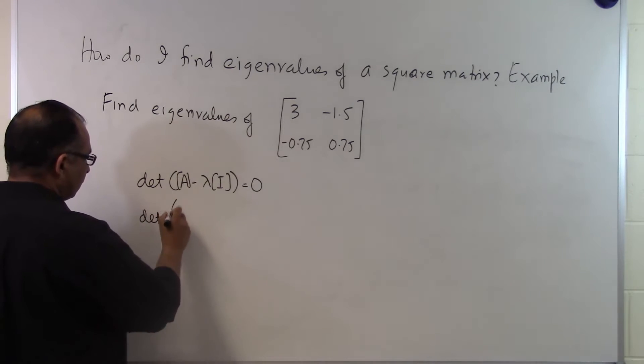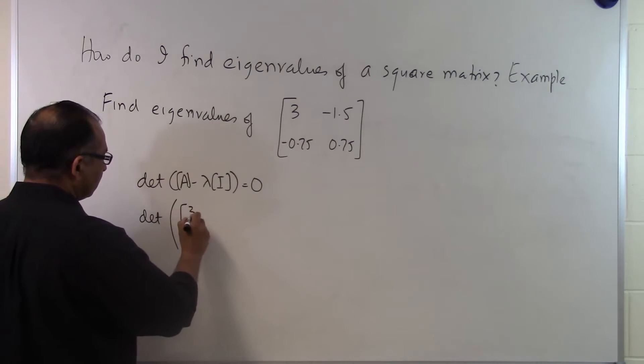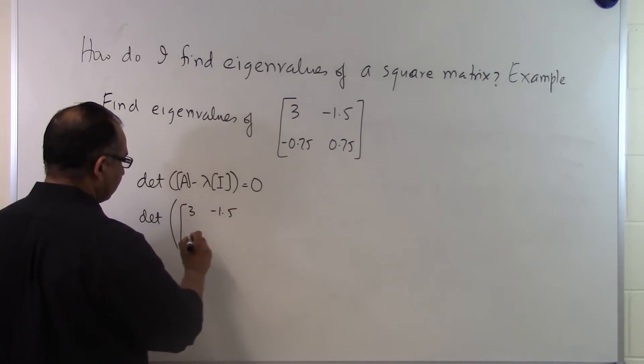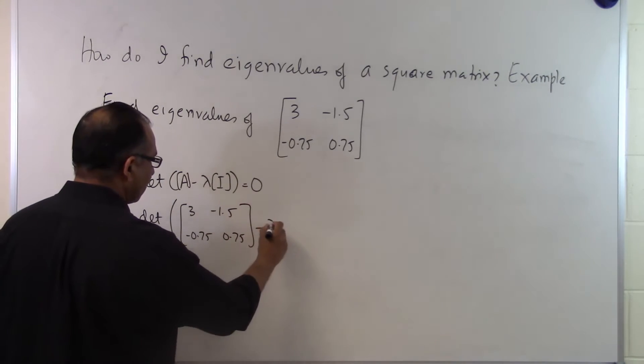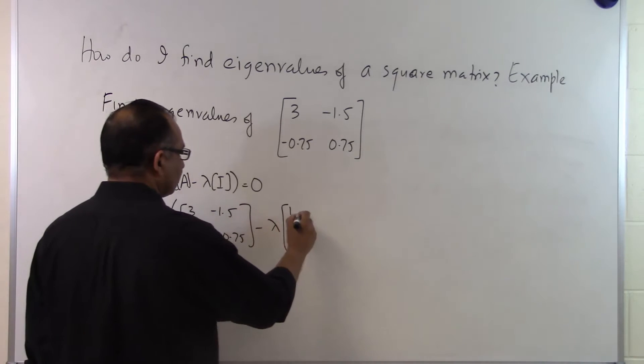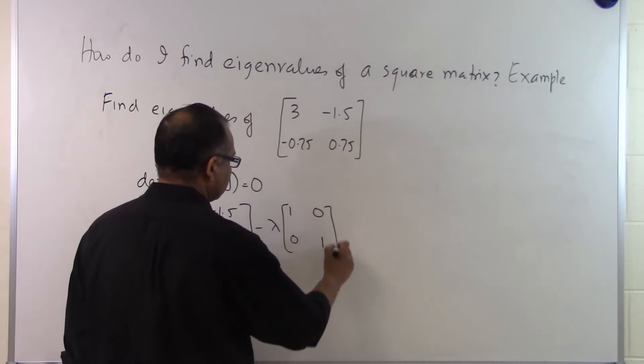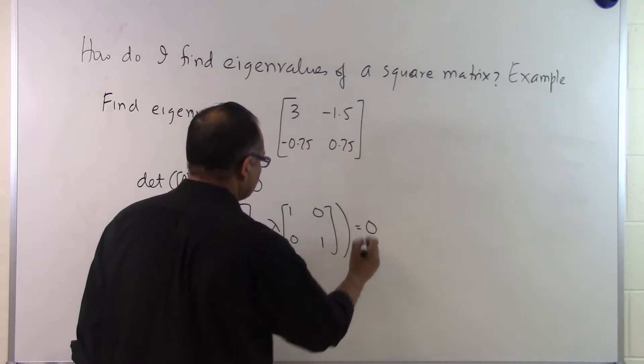So we have the determinant of [3, -1.5; -0.75, 0.75] minus λ times the identity matrix [1, 0; 0, 1] equals zero.